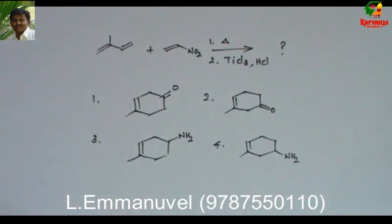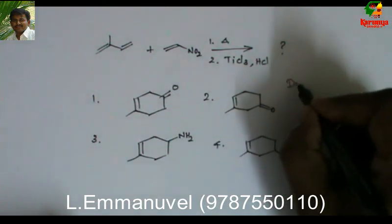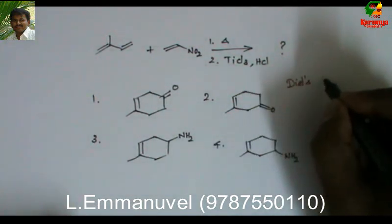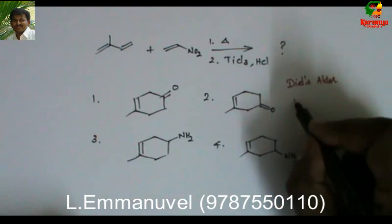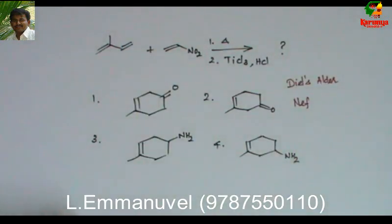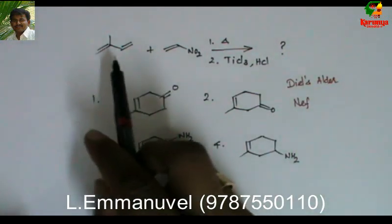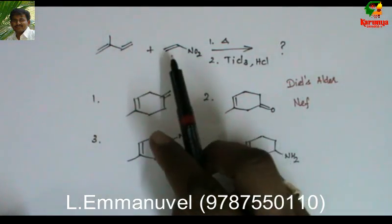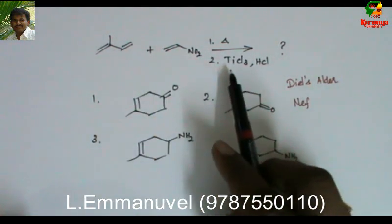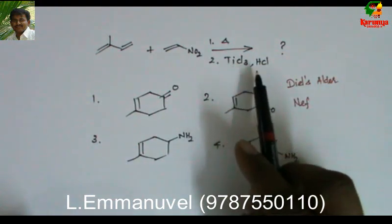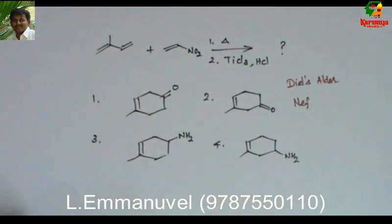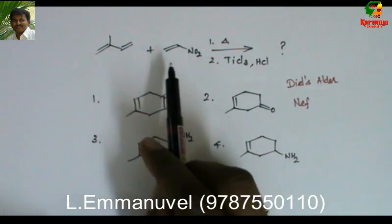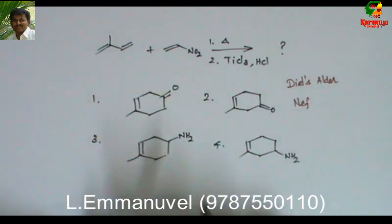Today I am going to solve a problem on Diels-Alder reaction and Nef reaction. When this diene is heated with nitroethene followed by treatment with titanium trichloride and HCl, what is the product? From the given options, it is very clear that these two compounds react to give a cyclic product.